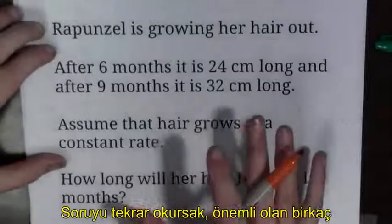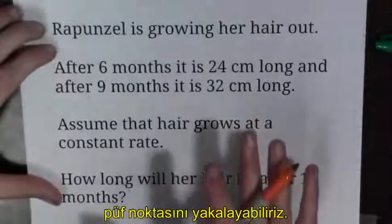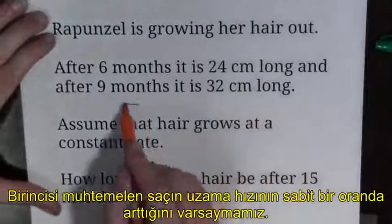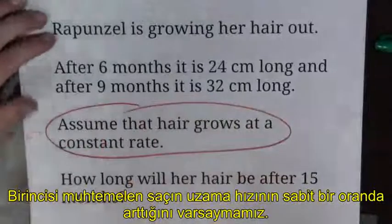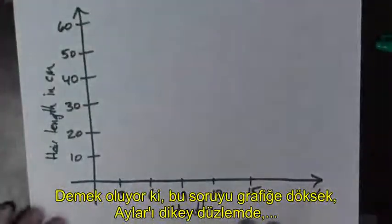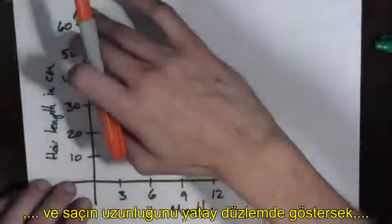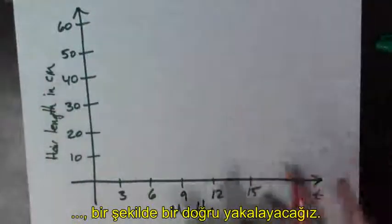If we read the problem again, there are a few key points that we need to keep in mind. The first is perhaps that we assume that hair grows at a constant rate. That means that if we try to plot with months on the horizontal axis and hair length in centimeters on the vertical axis, then somehow this is going to be a line.